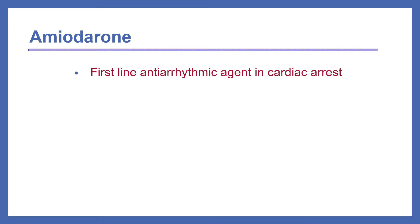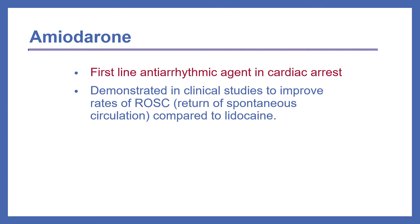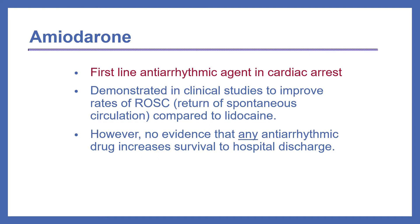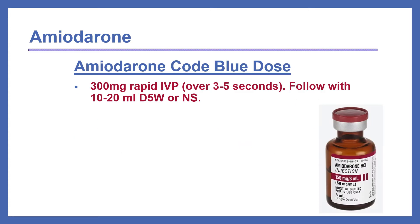Amiodarone is the first-line antiarrhythmic agent in cardiac arrest. It is demonstrated in clinical studies to improve rates of ROSC — return of spontaneous circulation — compared to lidocaine. However, there's no evidence that any antiarrhythmic drug increases survival to hospital discharge. The initial dose of amiodarone is 300 mg rapid IV push over 3 to 5 seconds, followed by 10 to 20 mLs of D5W or NS to push the dose into the circulation.